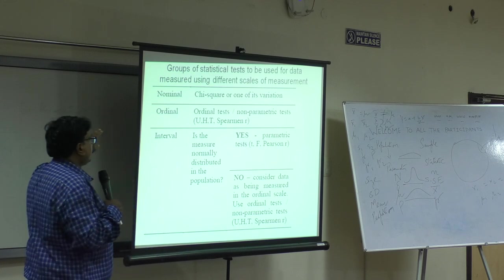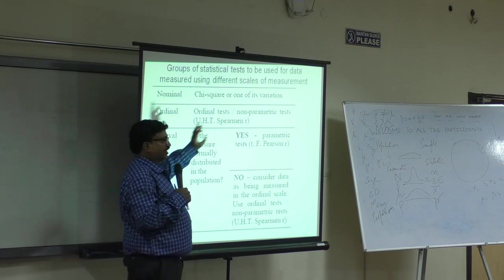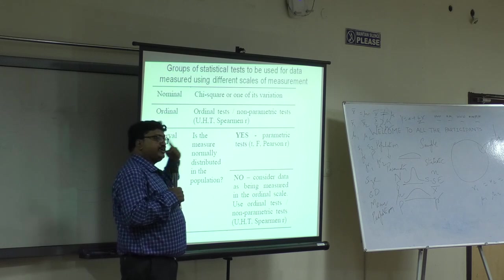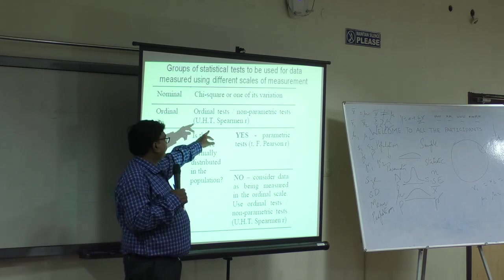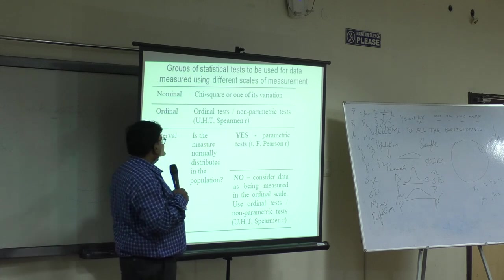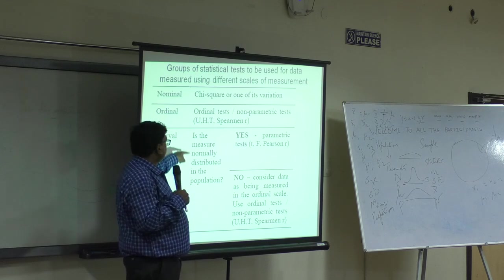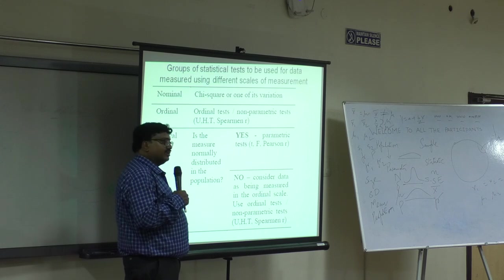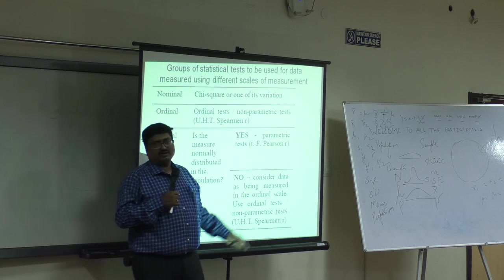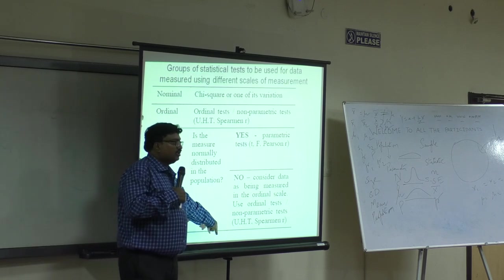Now, I said the nature of the data is nominal - chi-square. Ordinal, I do what? Non-parametric. I told Pearson is parametric. Spearman is non-parametric. Small r. If it is interval, you'll ask a question: is the measure normally distributed? If the answer to it is yes, you'll go for parametric. If the answer to it is no, then you'll go for non-parametric.